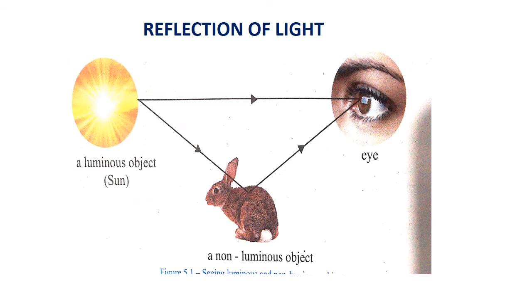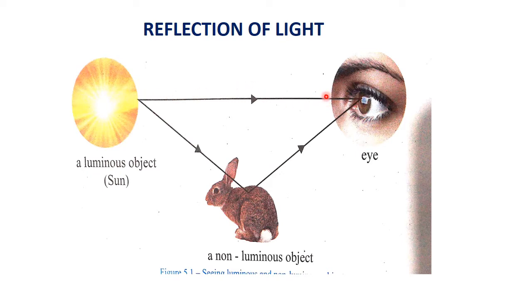Reflection of light. To see an object, light is necessary. We can see a luminous object directly because luminous objects emit light. When the light rays from a luminous object directly reach our eye, we can see that luminous object easily.